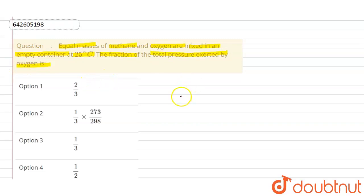So what we can find - first of all, we can find number of moles. Let's suppose equal masses, so mass of methane is w, so mass of oxygen also will be w.